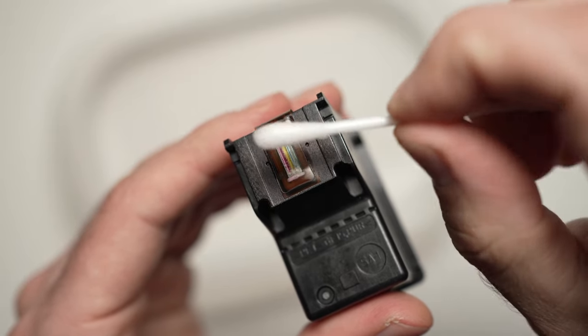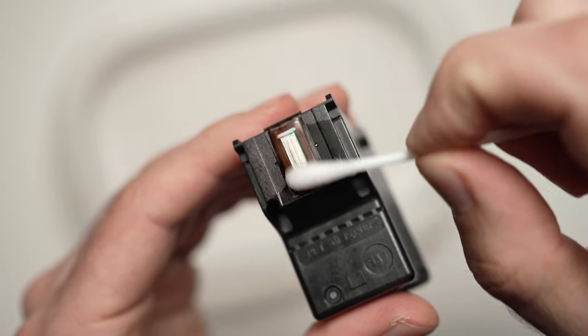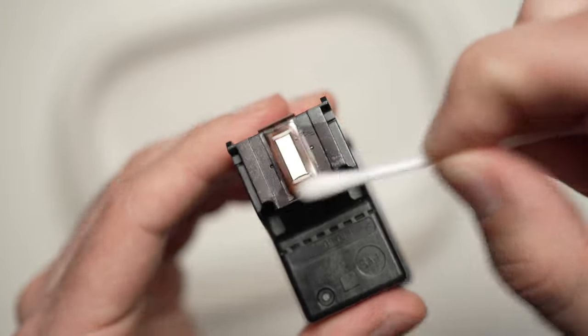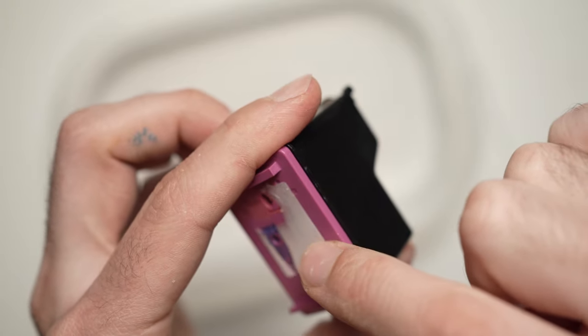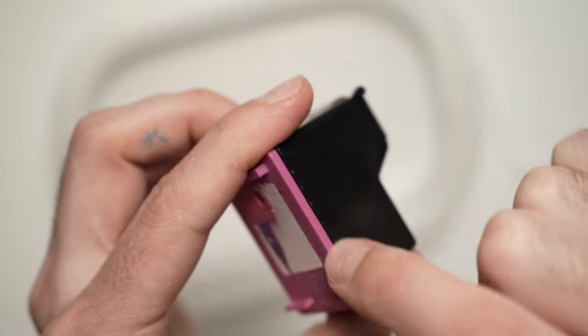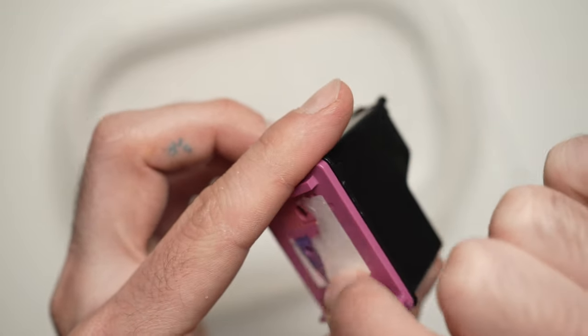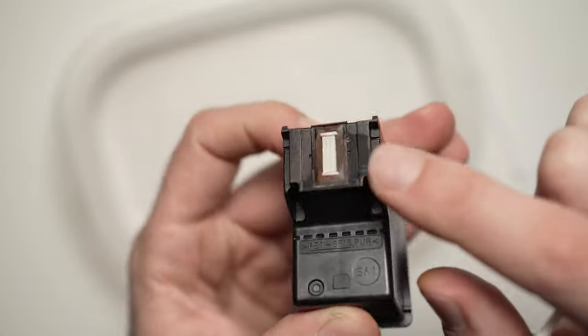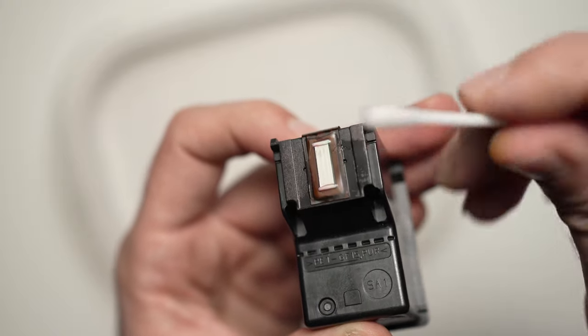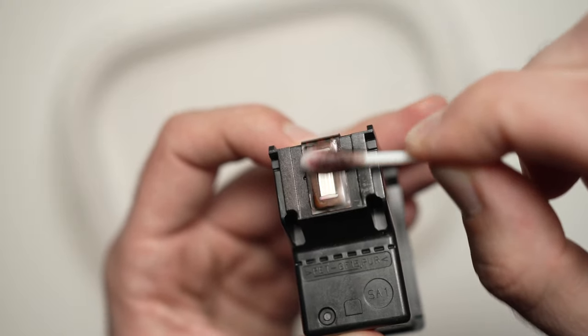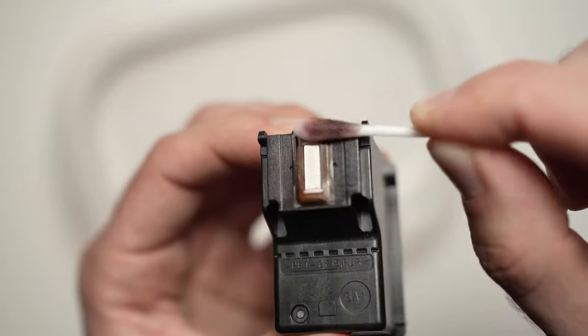And you're going to rub the print head. The print head is at the opposite side where the color top is with the label. Okay, so this is the print head. And you're going to rub it just to dislodge any dried ink.